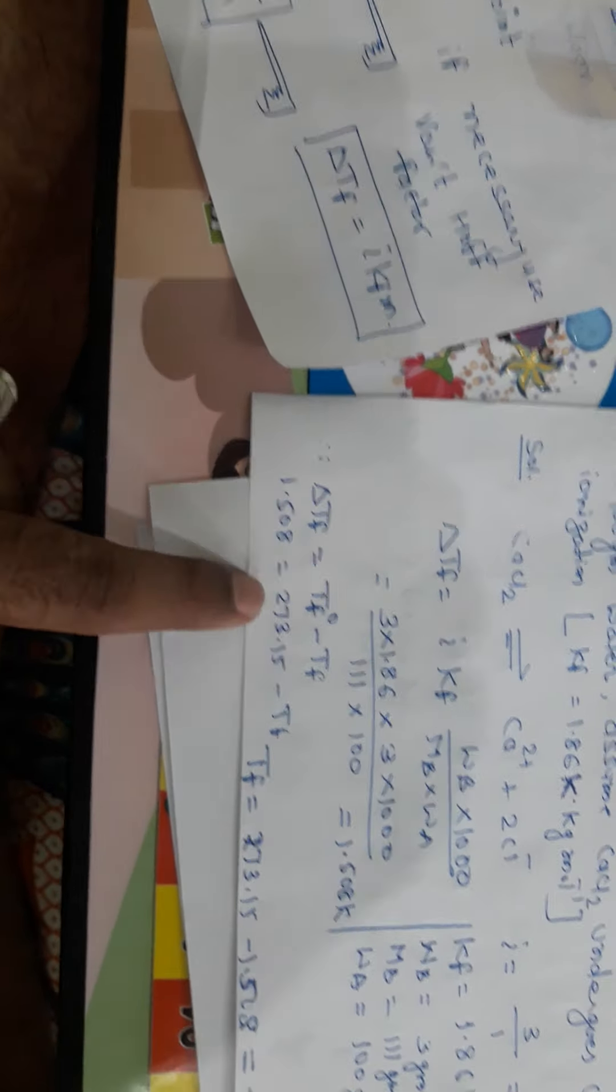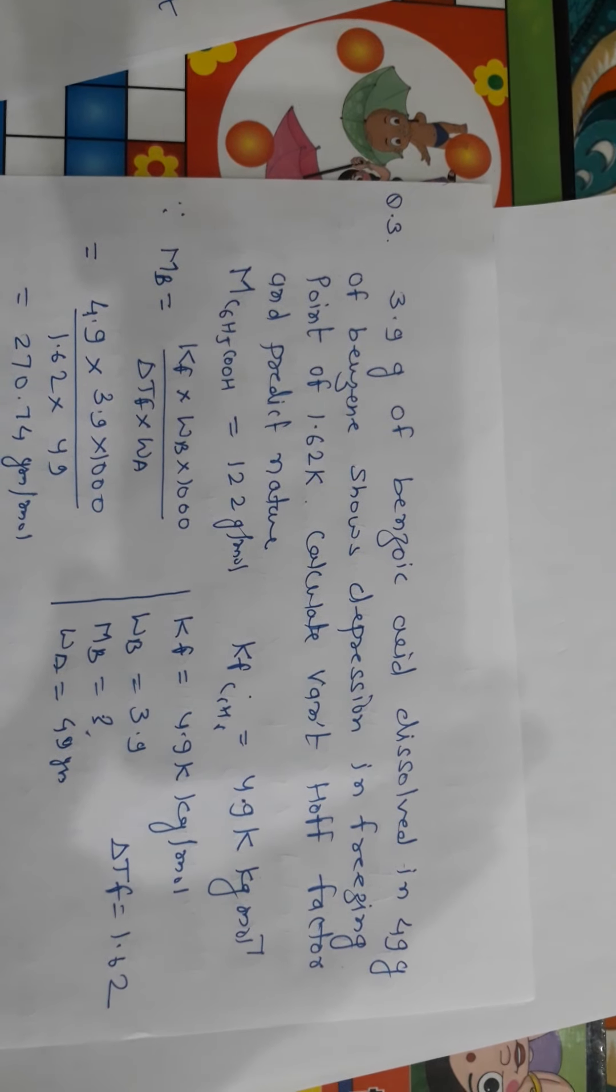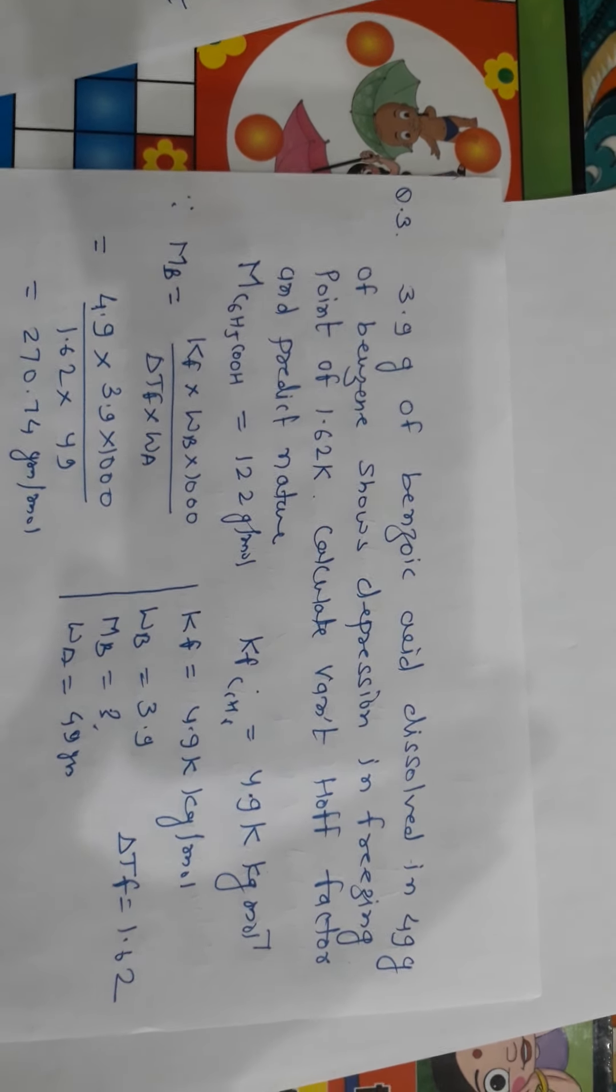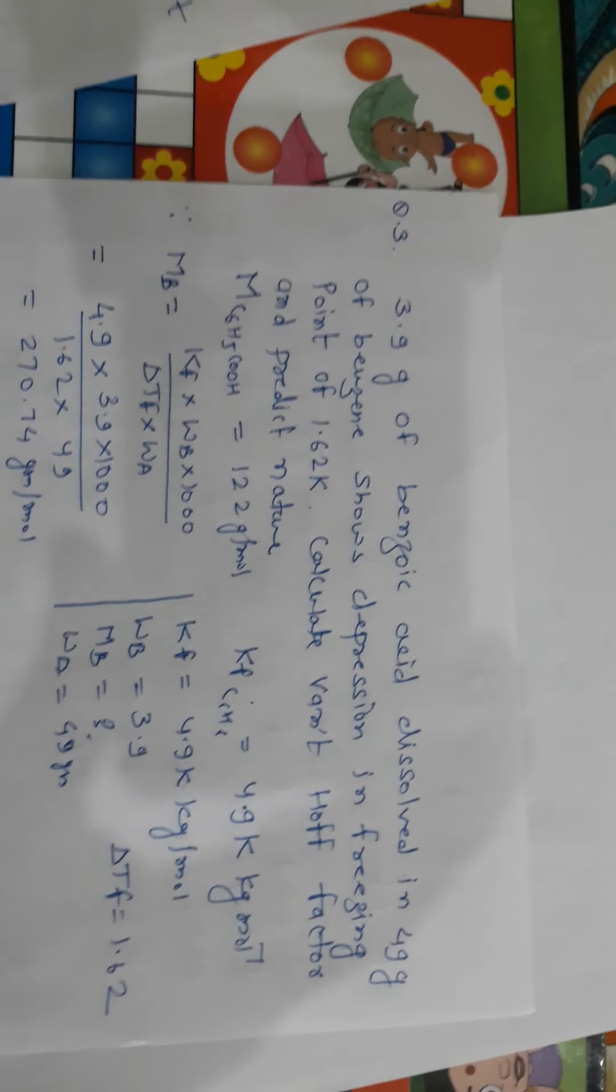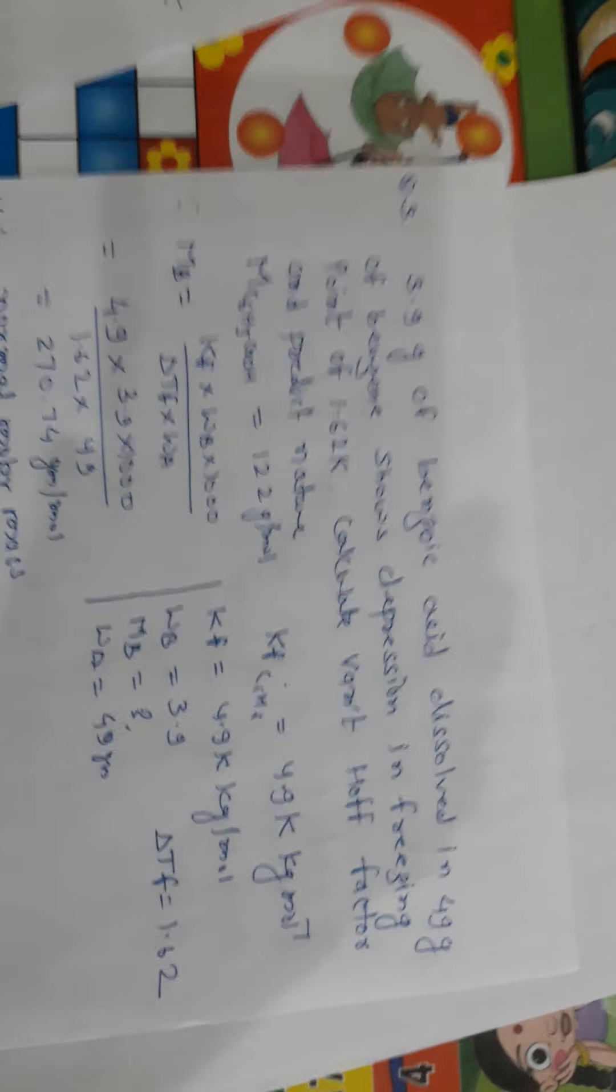Now our third problem. Third problem is 3.9 gram of benzoic acid dissolved in 49 gram of benzene. 3.9 gram, it is the Wb. And 49 gram of benzene, that means it is the Wa. Shows the depression in freezing point of 1.62 Kelvin. Depression in freezing point means ΔTf is 1.62 Kelvin. Calculate the van't Hoff factor. To calculate the van't Hoff factor, first we have to find out the molar mass.